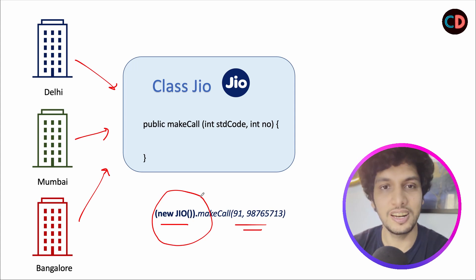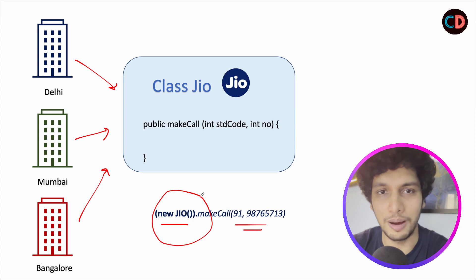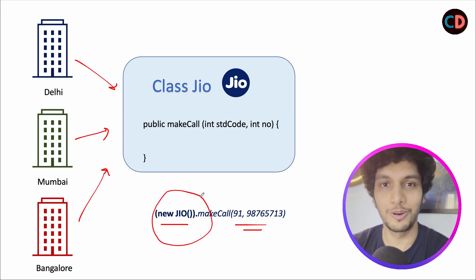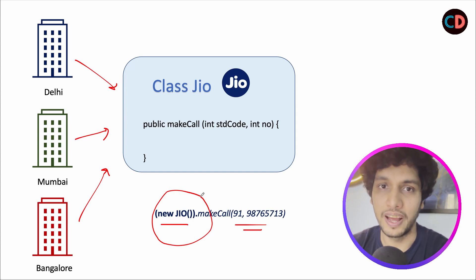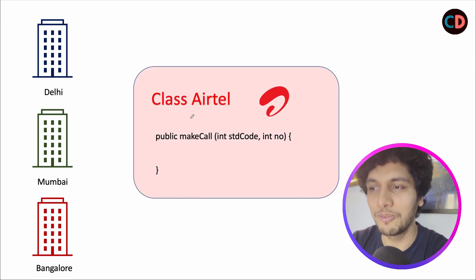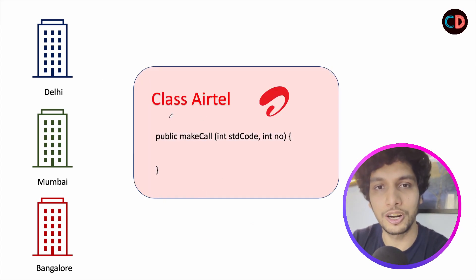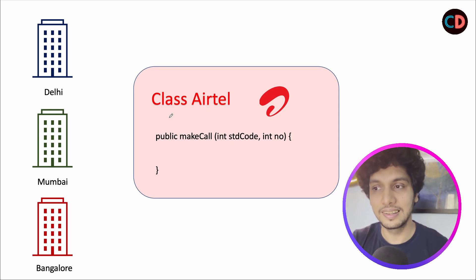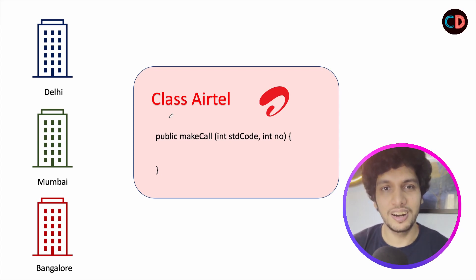It was going really well. However, after a year or so, Jio themselves increased their rates to almost double. Coding Decoded could not afford such a high increase in network fare. What comes to the rescue? Airtel Bharti comes to the rescue. Airtel launched a similar plan which was way lower than what Jio proposed, and since it was lower in tariff, Coding Decoded decided to switch from Jio to Airtel.